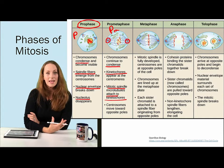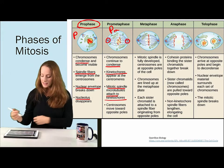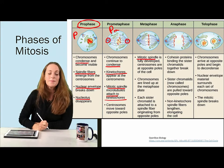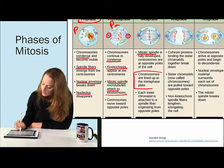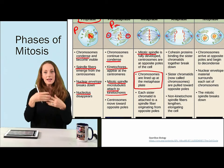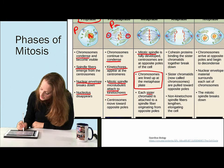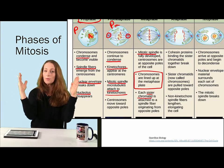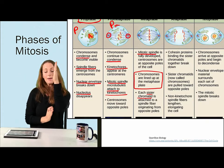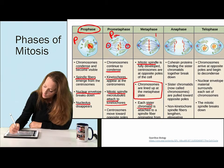Then metaphase. Metaphase is when you have the mitotic spindle fully developed, the centrosomes are at the opposite poles of the cell, and most prominently, the chromosomes are very nicely lined up at the center of the cell, or the metaphase plate. Each sister chromatid is then attached to a spindle fiber. Remember, the sister chromatids are those twin sisters — twin moms and twin dads — that are going to separate to opposite ends of the cell. So each sister chromatid is now lined up down the center of the cell.